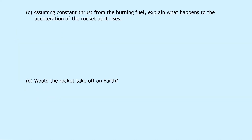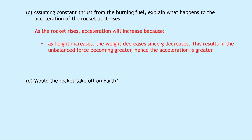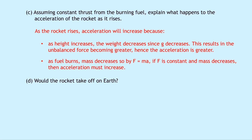Part C asks what happens to the acceleration as the rocket rises, assuming constant thrust. Acceleration will increase for two reasons. First, as height increases, gravitational field strength G decreases, so weight decreases, making the unbalanced force greater and hence acceleration greater. Second, as fuel burns, mass decreases — so with F staying constant and mass decreasing, acceleration must increase. Air resistance will act against the rocket as speed increases, but it's not enough to cause acceleration to decrease overall.